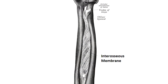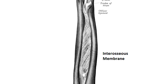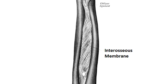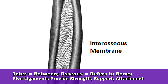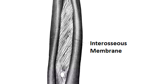Now let's take a look at the two forearm bones — you'll notice they have a web-looking connective tissue keeping them together, called the interosseous membrane. The prefix inter means between, and osseous refers to bones, so the name literally means the membrane between the bones. This fibrous connective tissue consists of five ligaments which not only help support and strengthen the forearm bones but also provide attachment points for some of the forearm muscles.